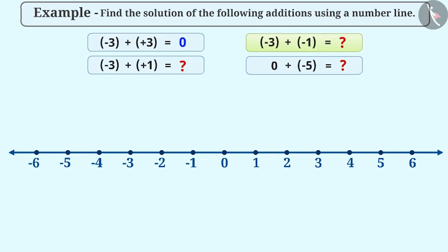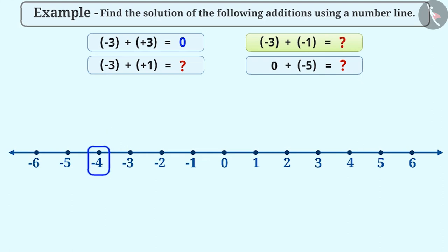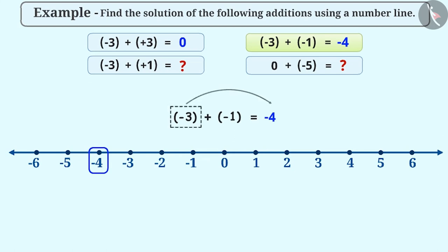For addition of minus 3 and minus 1, we first move 3 steps to the left of 0, then we move 1 step to the left again and reach minus 4. Thus, it is the result of minus 3 plus minus 1. When we add minus 1 to a number, or move 1 step to the left, then we get the predecessor of that number.